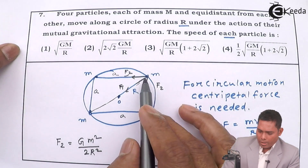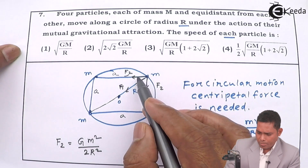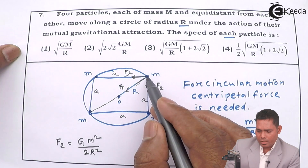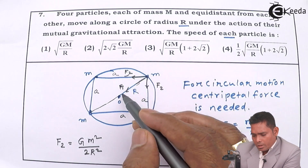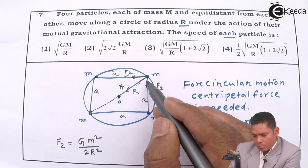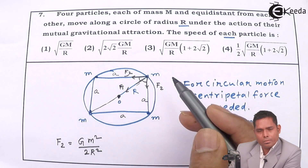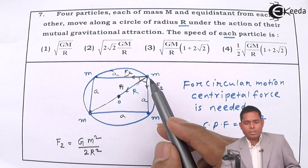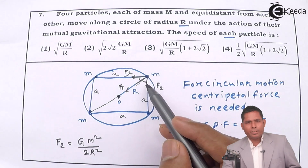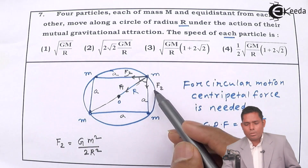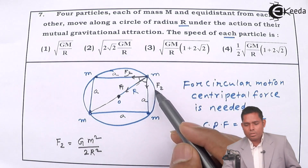These two F2 forces are equal in magnitude and the angle between them is 90°. Since they are symmetric, their components perpendicular to the center-line cancel out. Each makes an angle of 45° with the line toward the center. So the resultant of these two forces toward the center is 2·F2·cos45°.